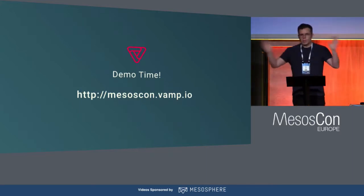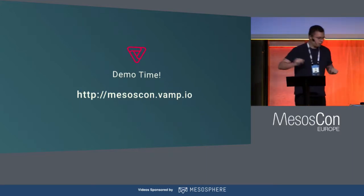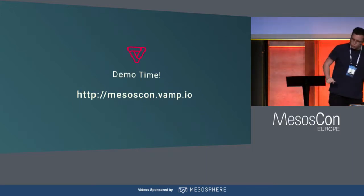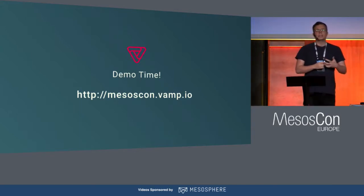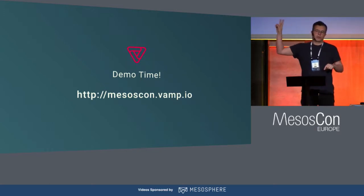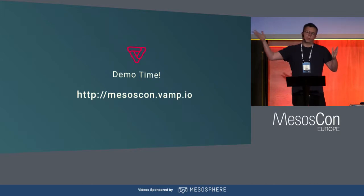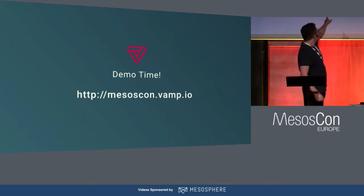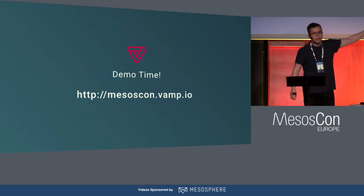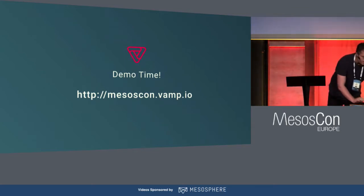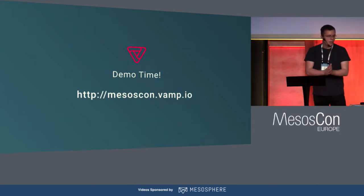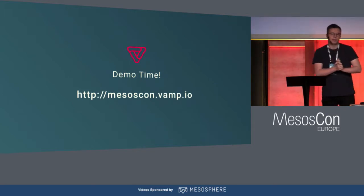The rest of my talk is demo time — all the funny stuff is over. I want to show you basically three scenarios, getting from a version 1 to a version 2 in two or three different ways. You can play along: if you go to http://mesoscon.vamp.io right now, you'll get a nice screen connected to an Azure cluster. We're using Microsoft's Azure Containers, which works really nicely — and we got free credits from them, which may also have been an influence.